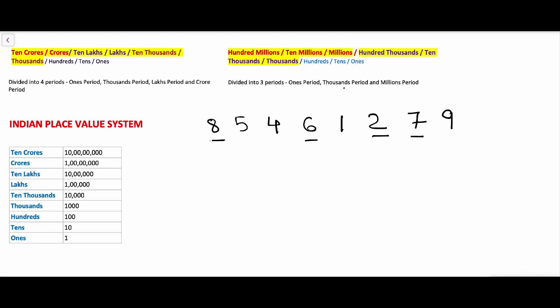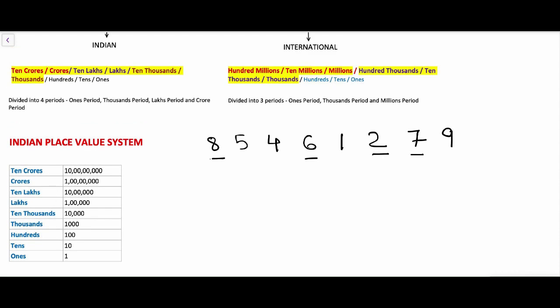The Indian place value chart is divided into 4 periods: ones period, thousands period, lakhs period, and crores period. So if I want to write the place value of all the digits according to the Indian place value chart, how will I write it? Let's see.